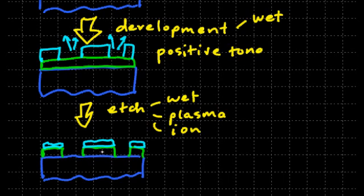And it's called a resist, obviously, because it resists this etch process. So, there's my thin film going away. Now your thin film is patterned.